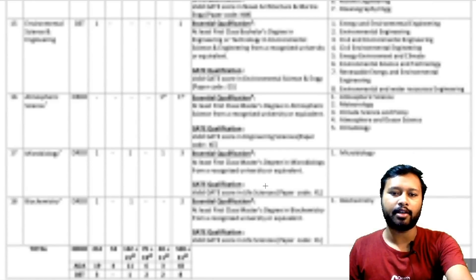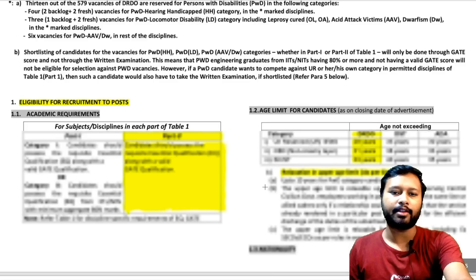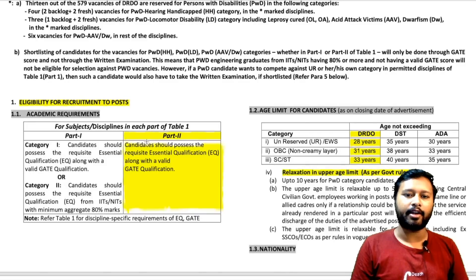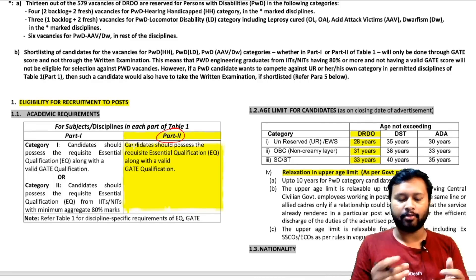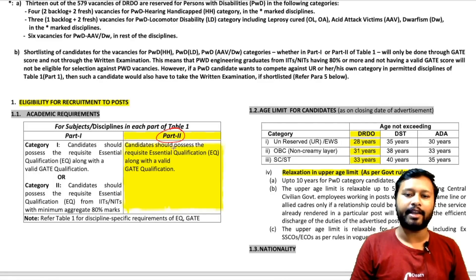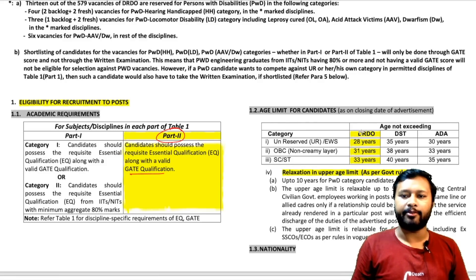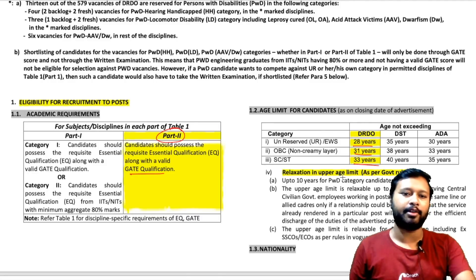The eligibility criteria state that candidates must possess the requisite essential qualification along with a valid GATE qualified scorecard. The age limit is 28 years for unreserved category, 31 years for OBC, and 33 years for SC/ST candidates. Relaxation on the upper age limit will be given as per government rules.